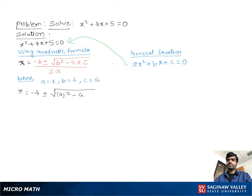We get x equal to negative 4 plus minus square root of 4 squared minus 4 times 1 times 5, all over 2 times 1.